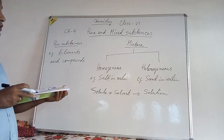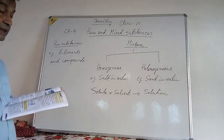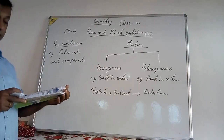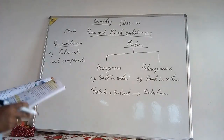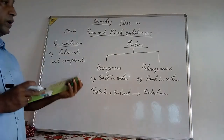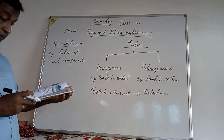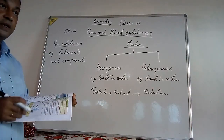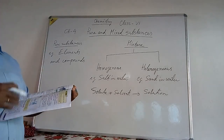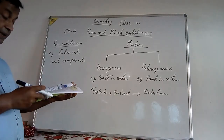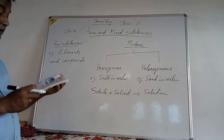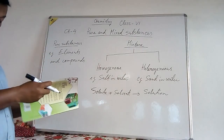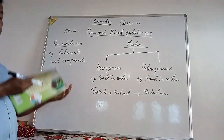Any solution is a homogeneous mixture. Another type of homogeneous mixture is an alloy, which is formed by mixing one metal with another metal, or a metal with a non-metal. You can see this in the 'Did You Know' section on page number 59.